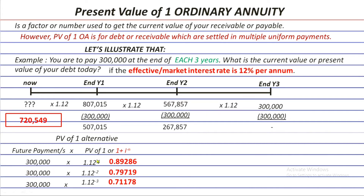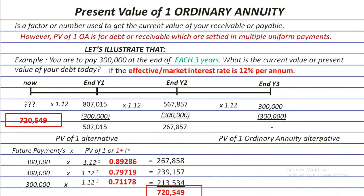Multiplying each 300,000 by its respective factor and summing the results gives 720,549 — the same answer. But we still need to learn the present value ordinary annuity because this timeline technique and the approach using the present value of one factor become very inefficient for maturities of 15, 20, or 40 years — it would be extremely time-consuming. So let's look at the present value ordinary annuity formula.